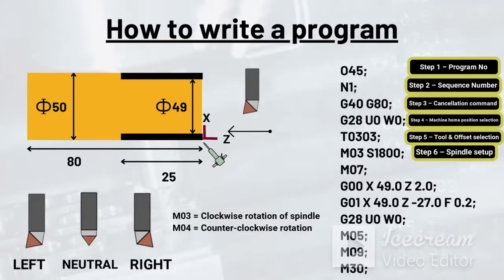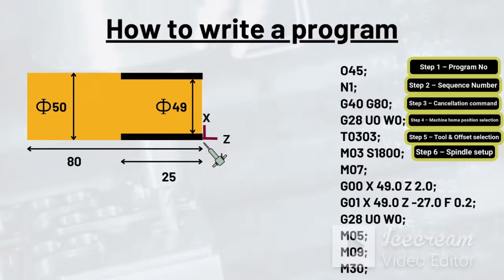We have to provide spindle speed as well, for which command starts with S. So a speed of 1800 RPM is provided by S1800. The complete command here is given by M03 S1800 end of block.